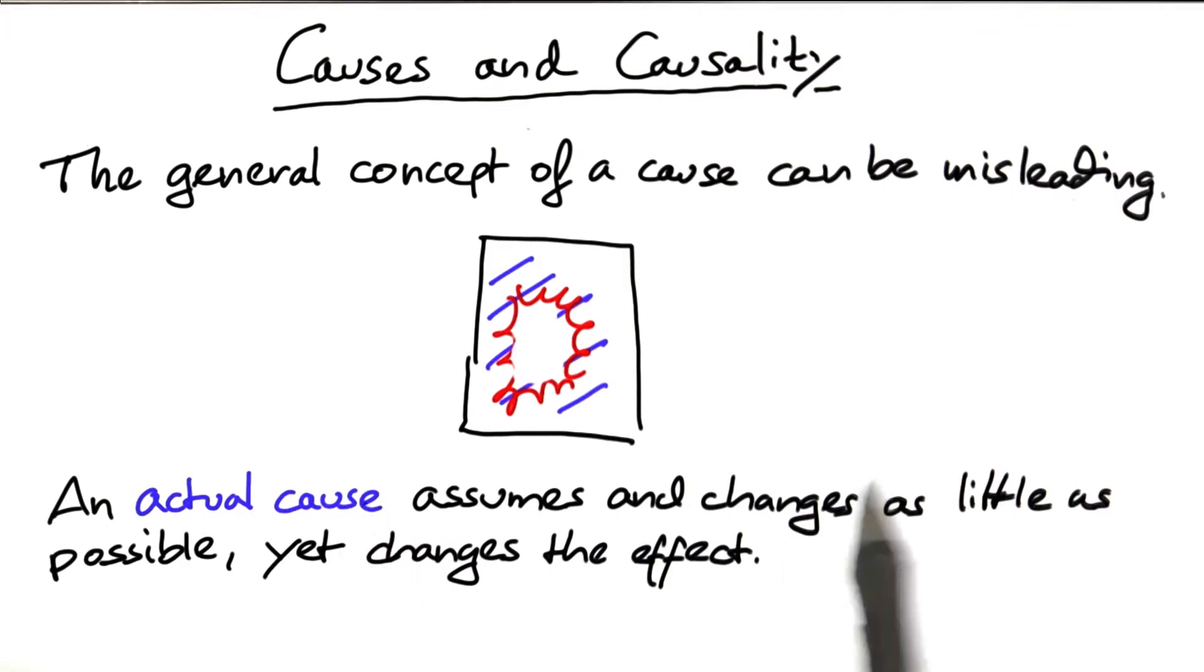Starting with the general cause, the entire input, it produces an actual cause, namely a subset of the input in which everything is relevant for producing the effect.